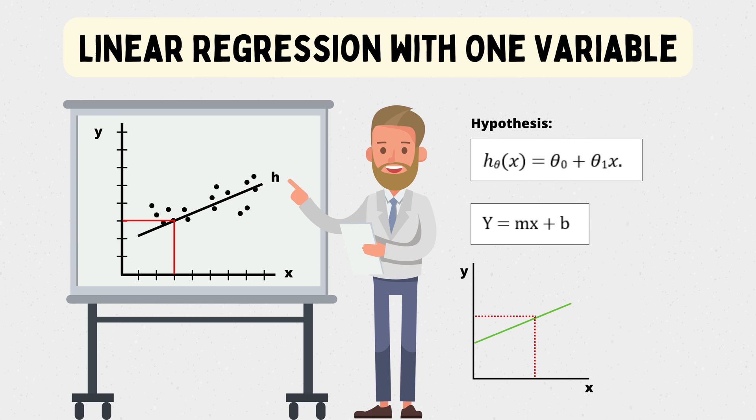Theta 0 or b represents the y-intercept, the value when x is 0. And theta 1 or m is the slope coefficient, indicating how y changes for a unit change in x.